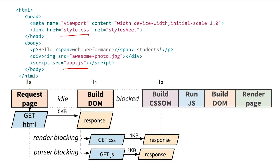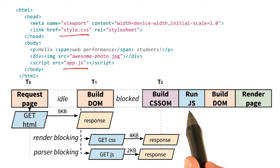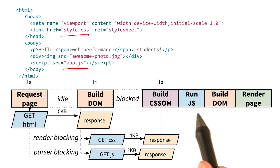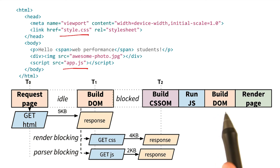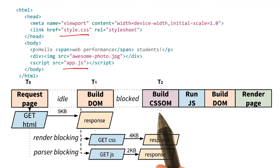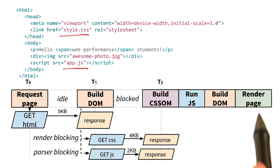Correct. Once the CSS arrives, the browser builds the CSS object model, which unblocks JavaScript and allows it to execute. Once the JavaScript is executed, the DOM parser becomes unblocked, which means complete DOM construction. And finally, we have both the DOM and the CSS object model, which means that we can render the page. As you can see, even a simple page such as this one has a lot of dependencies that slow down the critical path.